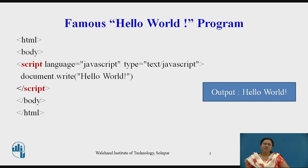This is the famous Hello World program we will look at today. Here we have the HTML tag, inside that the body tag, then the script tag. Inside the script tag we have introduced different attributes like language and type, and we have called the document.write function which returns the string 'Hello World'.